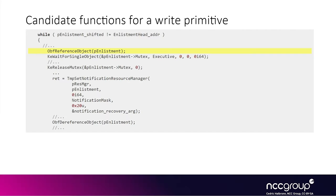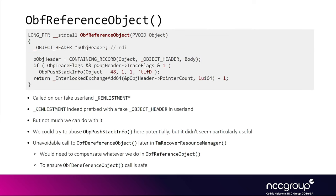The first function we can look at is called obf_reference_object. It's called on our userland k-enlistment passed as the object argument. It is very straightforward and doesn't provide a lot of opportunity for abuse. Our fake userland k-enlistment is prefixed with a fake object header in userland, so it is a candidate, but there is not a whole lot we can use it for. One quirk of targeting obf_reference_object in general is that there is an unavoidable call to obf_dereference_object_header in the vulnerable function, so we'd have to compensate with additional complexity to ensure it is safe for the later call.